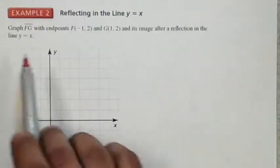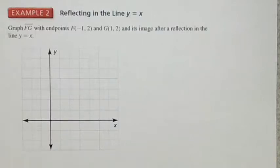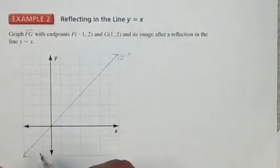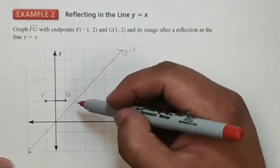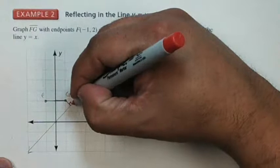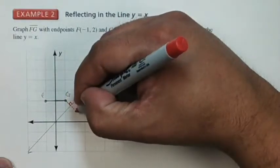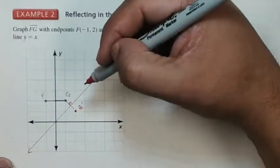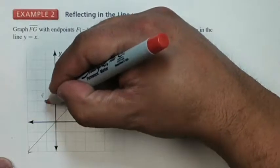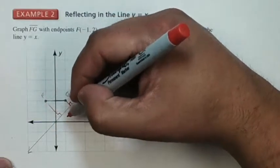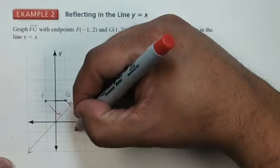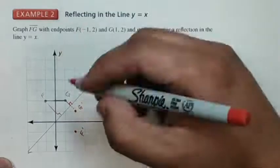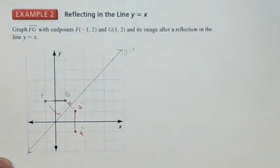This next example tells me to reflect along the line y equals x. There's the line y equals x — from the origin you go up 1, over 1. I graph points F and G. Remember you're looking at equidistance, so the reflection line is perpendicular. I come back the other direction at a 90-degree angle, and G prime is here. For F prime, you go diagonal one and a half, then come down across, and F prime lands here.